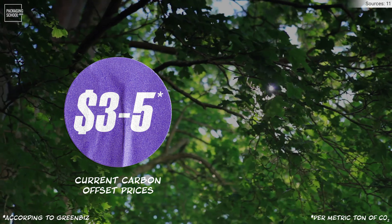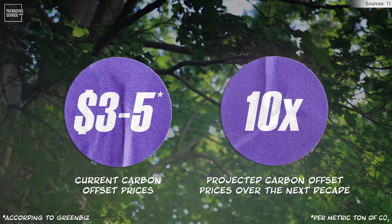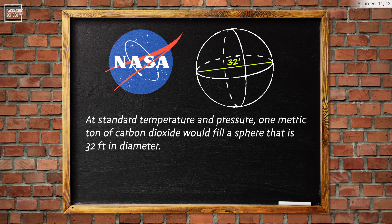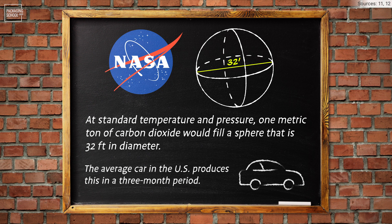However, experts fear a tenfold increase in the next decade as businesses adapt to net-zero targets. To put that into perspective, a metric ton of CO2E — think of it in terms of a common everyday thing: driving. According to NASA, at standard temperature and pressure, one metric ton of CO2E would fill a sphere that is 32 feet in diameter. The average car in the US produces this amount in a three-month period.